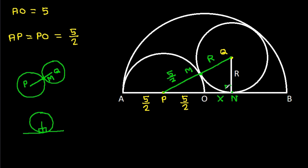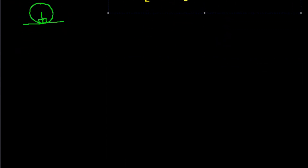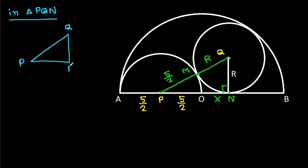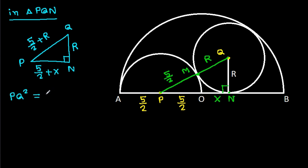In triangle PQN, angle PQN is 90 degrees. QN is r, PN is 5 over 2 plus x, and PQ is 5 over 2 plus r. By the Pythagorean theorem, PQ squared equals PN squared plus QN squared, so (5/2 + r)² = (5/2 + x)² + r².